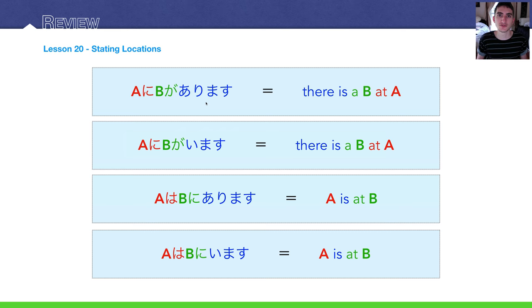And remember, arimasu is for inanimate objects, imasu is used for animate objects. A ni B ga imasu. And then you can kind of flip it around and change the direction of the sentence to focus more on something that exists in a place. So, A wa B ni arimasu. Or if it's animate, A wa B ni imasu. A is at B, or A exists at B.